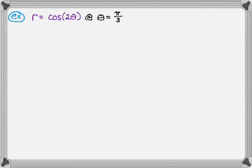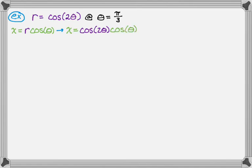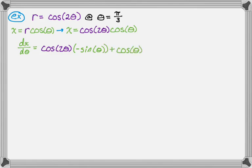We remember that x equals r cosine theta, and we replace r with cosine of two theta. So x equals cosine of two theta times cosine of theta. We start by finding dx/dθ. This is a product, so we use the product rule: first times derivative of the second, which is negative sine theta, plus second times derivative of the first, which is negative two sine of two theta — don't forget the chain rule on that one.